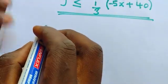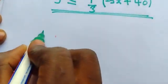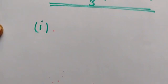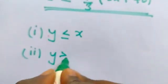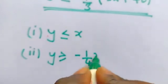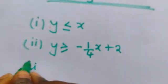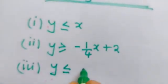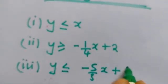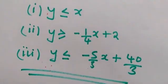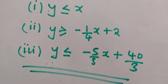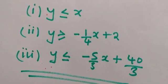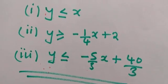So our three inequalities, just to conclude: the first one was y less or equal to x. The second one is y greater or equal to negative 1 over 4x plus 2. The third one is y less or equal to negative 5 over 3x plus 40 over 3. So these are the three inequalities. Thank you so much everyone for following. Don't forget to subscribe if you're watching on YouTube, and if you're watching on our Facebook page, don't forget to like the page and invite your friends. Bye-bye.